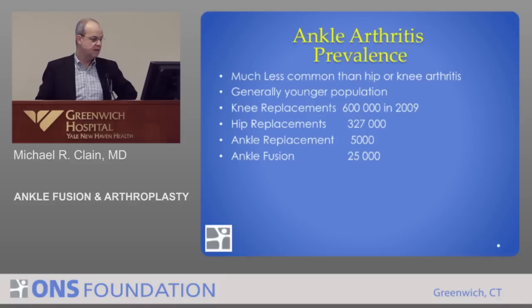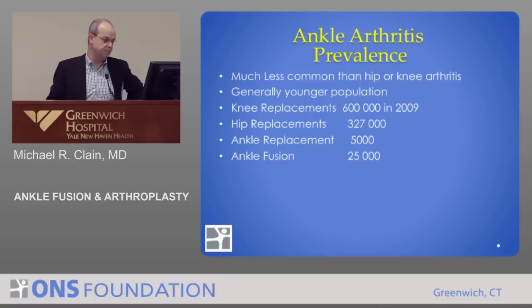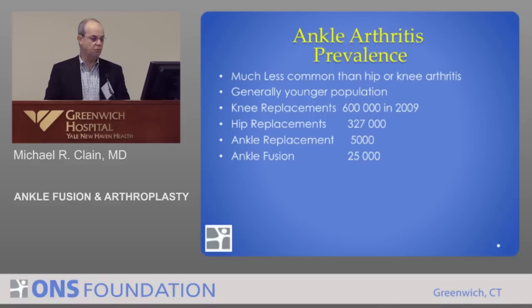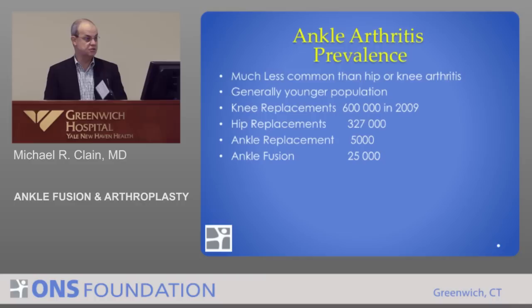Looking at approximate numbers from the last decade: knee replacements supplanted hip replacements as being more common, and a lot are done in the U.S. The number of ankle replacements done in the U.S. is about 5,000 — with 50 states, that's not that many. An average hip or knee replacement surgeon might do 100–200 a year, which feeds into experience issues. The number of ankle fusions is about 25,000 in the U.S., and those numbers will probably change — it'll be more ankle replacements than fusions over time.